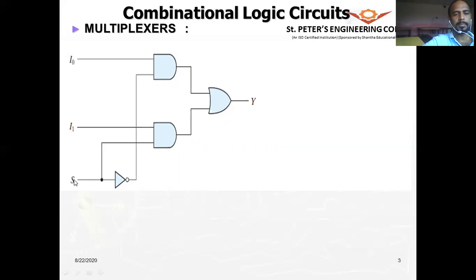Let us look at a simple multiplexer circuit. With one selection line, n equals 1, so 2^1 equals 2 — we have 2 input lines and 1 output line. The output at any given time will be either I0 or I1, depending on the input called S, which is the selection line that selects which particular input is available at the output.